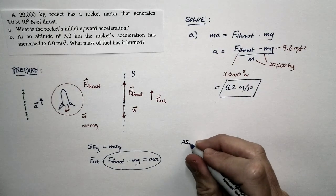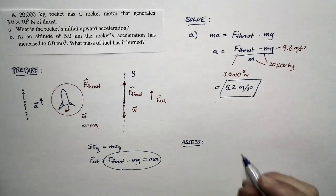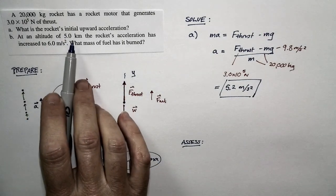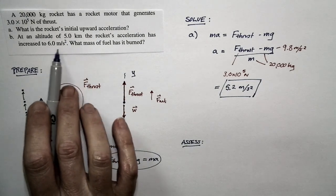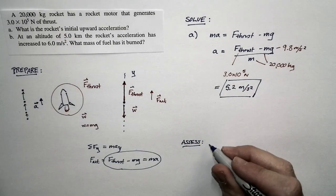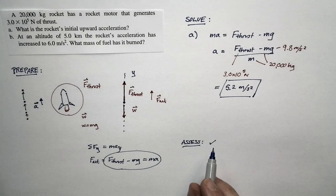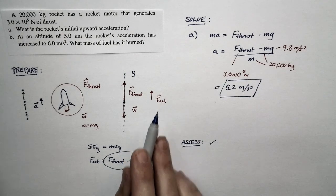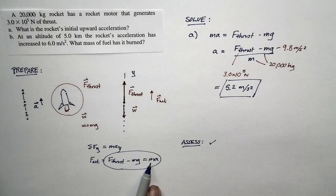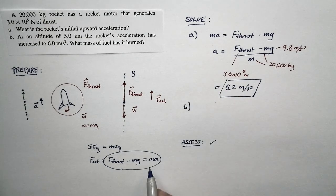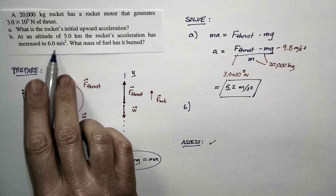Now for a quick in-process assessment. The initial acceleration is 5.2 meters per second squared. Part B tells us that after the rocket reaches an altitude of 5 kilometers, the acceleration has increased to 6 meters per second squared. So this number should be less than 6 — and it is. As the rocket's mass decreases, the weight force decreases while the thrust force stays the same, so the net force grows. With a bigger net force and smaller mass, we expect the acceleration to increase — and it does.